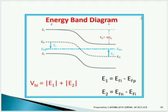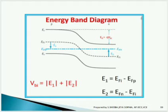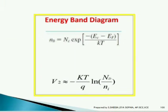Moving to the value of potential Vbi: the energy band gap is obtained from the energy gap diagram as |E1| + |E2|, where E1 equals Efi minus Efp, and E2 equals Efn minus Efi. Here Efi represents the Fermi level of the intrinsic semiconductor. Also, the value of n0 is obtained from the conduction and Fermi levels as Nc·exp(−(Ec − Ef)/kT), where k and T are constants.